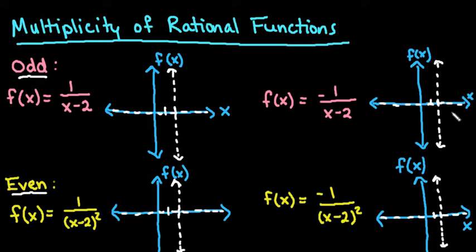For every single one of these examples, our horizontal asymptote and our vertical asymptote are the same. For all of these, our horizontal asymptote is at the line y equals 0, or the x-axis, and the vertical asymptote is at x equals 2.